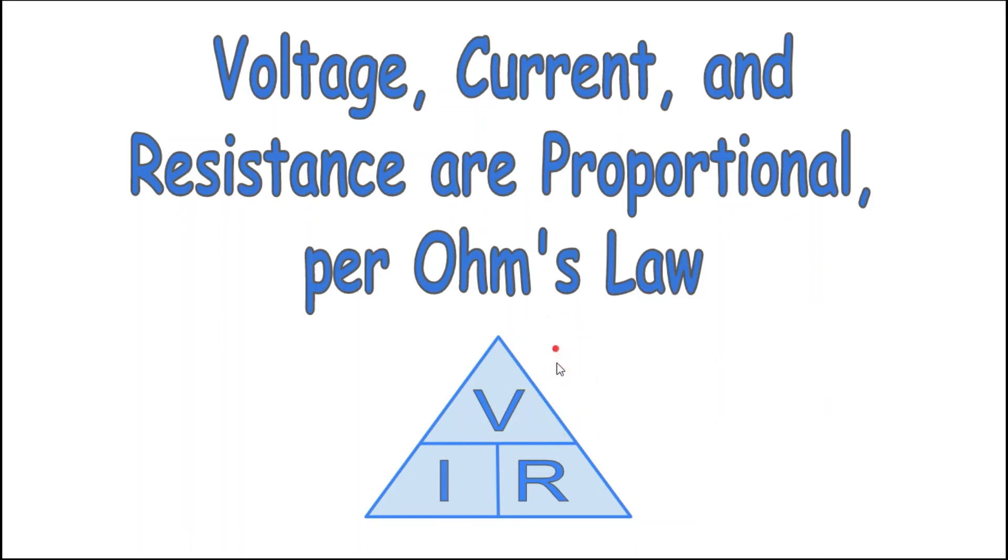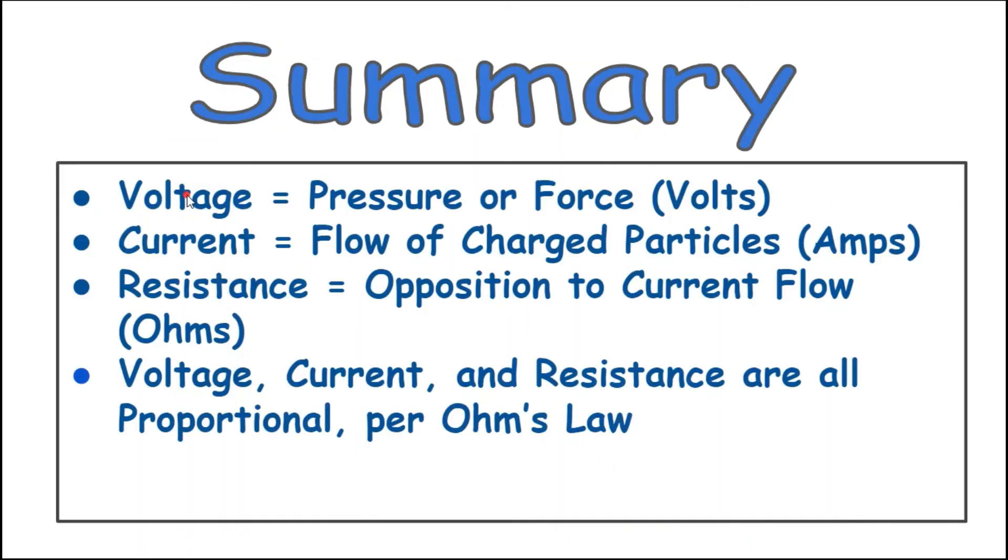Voltage, current, and resistance are proportional to each other per Ohm's law, which could be calculated using the Ohm's law triangle. To summarize: voltage is the pressure or force which pushes charged particles such as electrons through a conductor and is measured in volts. Current is the rate of flow of these electrons and is measured in amps. Resistance is the opposition to current flow and is measured in ohms. Voltage, current, and resistance are all proportional to each other in a circuit per Ohm's law.